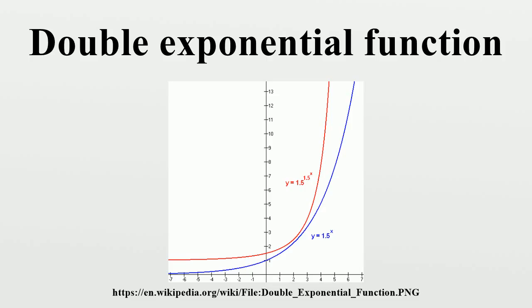The largest known prime number in the electronic era has grown roughly as a double exponential function of the year since Miller and Wheeler found a 79-digit prime on EDSAC1 in 1951.